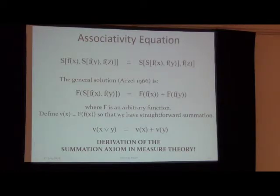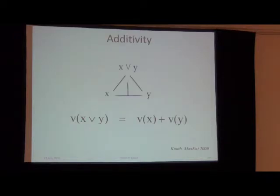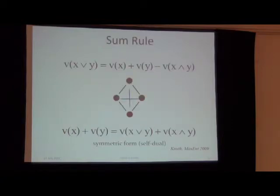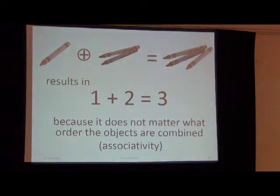Summation is very important when one considers a measure assigned to a structure that is associative. On slide 25, I highlight the additivity again, discussed in the MaxEnt 2009 proceedings. On slide 26, I have a picture of the more general sum rule, where you subtract off the intersection term. On slide 27 and 28, we have an epiphany: the fact that one crayon combined with two crayons always gives three crayons is because it doesn't matter what order the objects are combined — this is due to associativity.